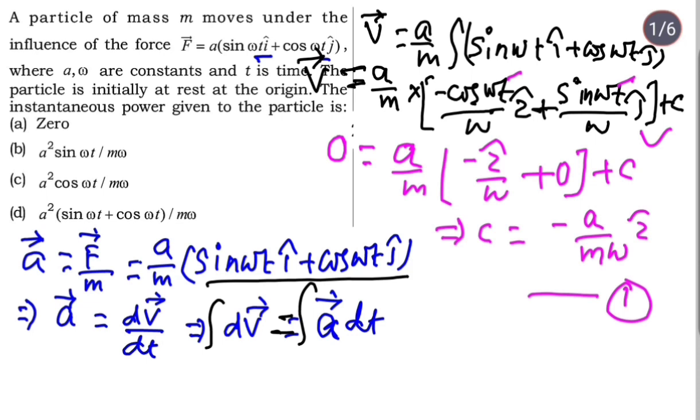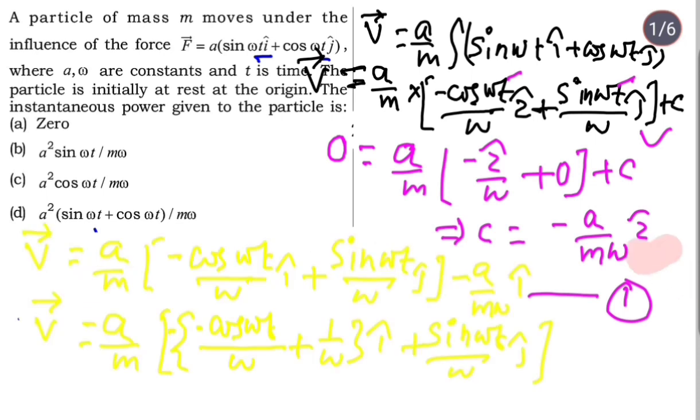Now let's substitute C's value back into the real expression. When we put it in, both terms have i cap, so we'll combine them. One is minus and one is plus, so they'll simplify nicely.